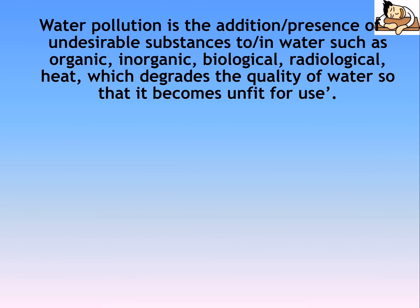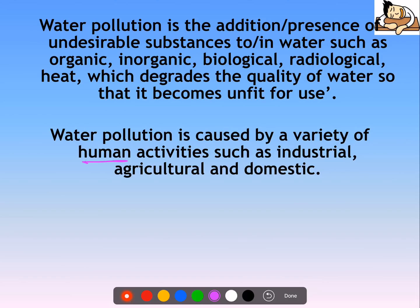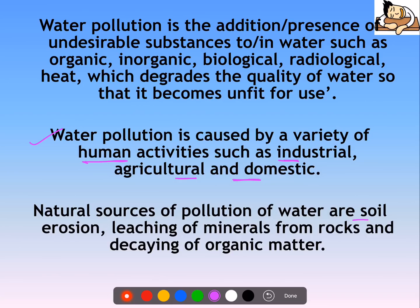There can be both types of causes. Human causes, which we call anthropogenic causes — human activities such as industries, agriculture, and domestic waste cause water pollution. Then there are certain natural causes also: soil erosion, leaching of minerals from rocks, and decaying of organic matter — all of these cause water pollution.